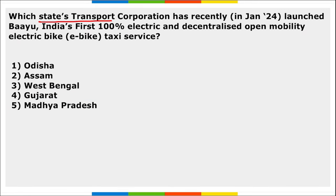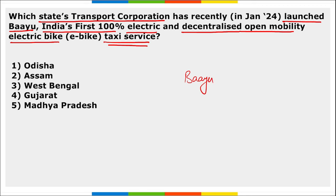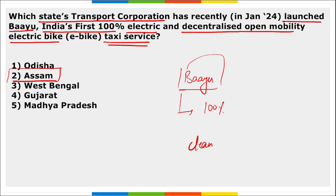Next: which state's transport corporation recently launched 'Bayou' — India's first 100 percent electric and decentralized open mobility e-bike taxi service? It was launched by Assam. Remember, Bayou also launched the 'Bayou Clean Air Movement,' which is a sustainable mobility initiative launched by the Assam State Transport Corporation.